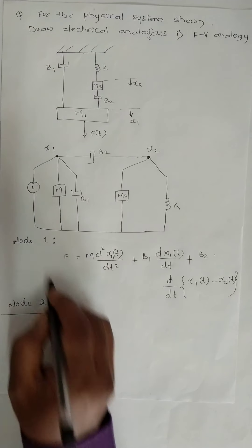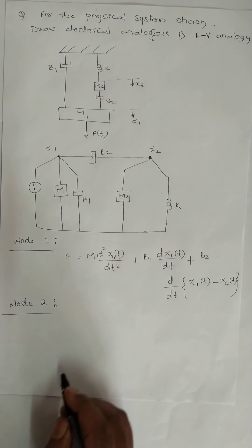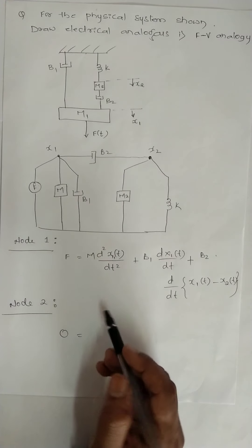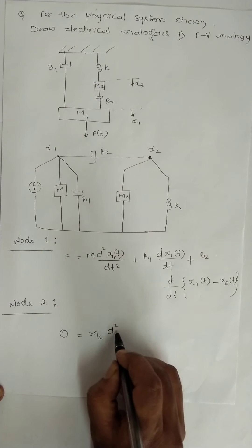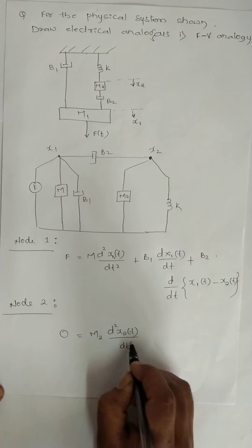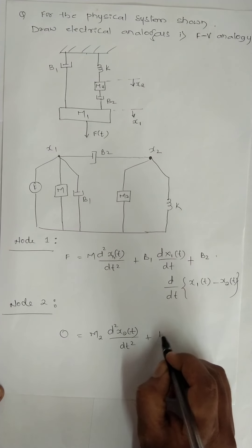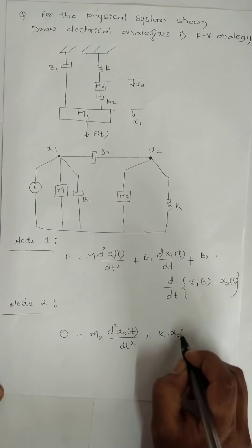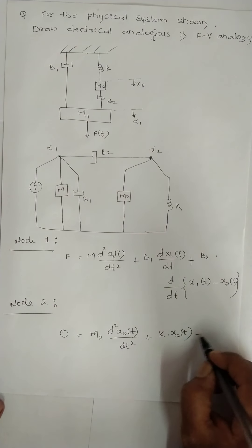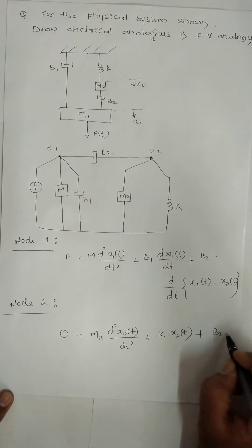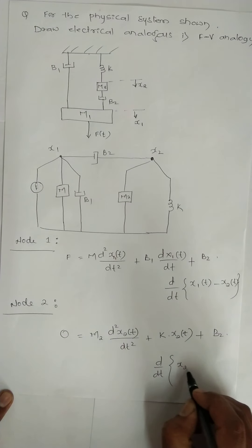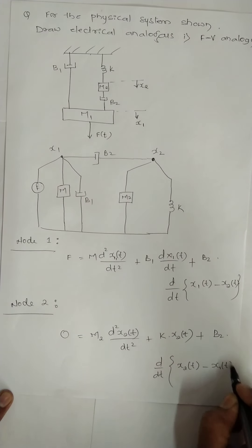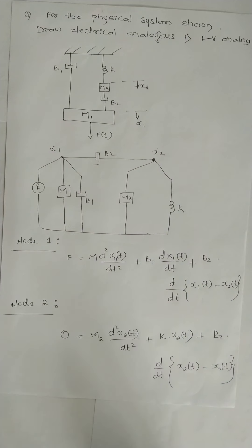Similarly for node 2, there is no force. Then M2 mass means d²x2/dt² plus K x2(t), there will be no differentiation for spring. Then again B2 d/dt, now we consider x2, so x2(t) - x1(t). So this is writing equilibrium equations.